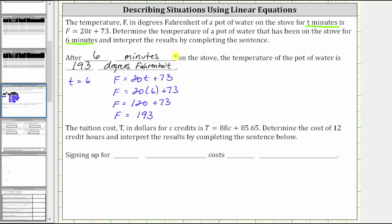Let's look at our second example. The tuition cost T in dollars for C credits is T equals 88C plus 85.65. Determine the cost of 12 credit hours and interpret the results by completing the sentence below.